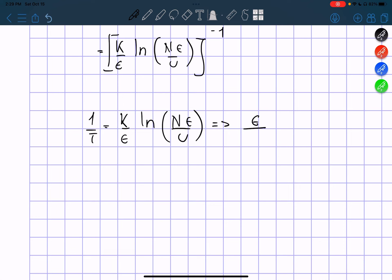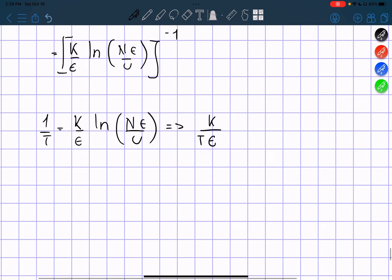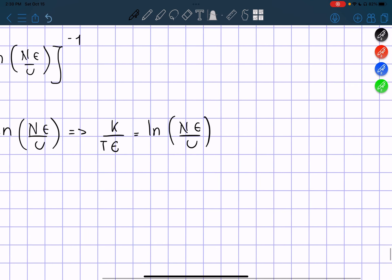Constant over, actually no. Yeah, I should do this for now, constant over T, K over T times the constant is equals to natural logarithm of N times the constant divided by U. So now we can put everything with the power of E.